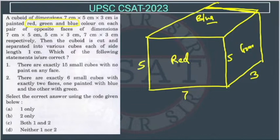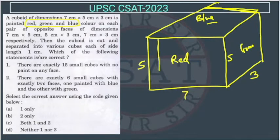Then the cuboid is cut and separated into various cubes, each of size 1 centimeter. So now this is being cut into 1 centimeter cubes.